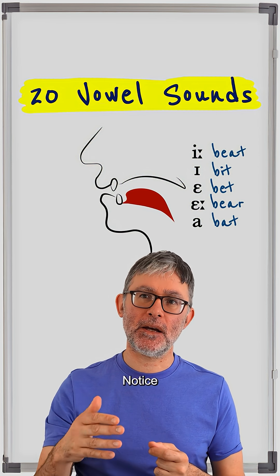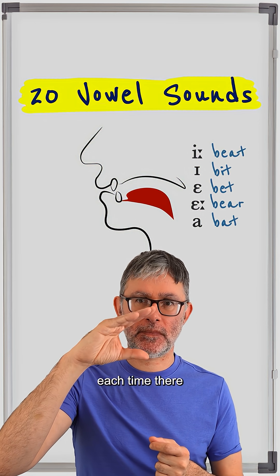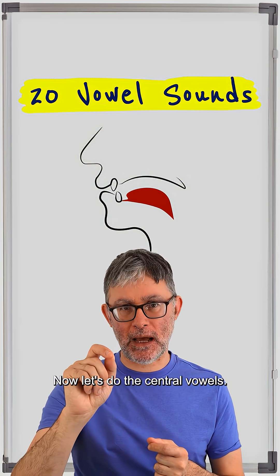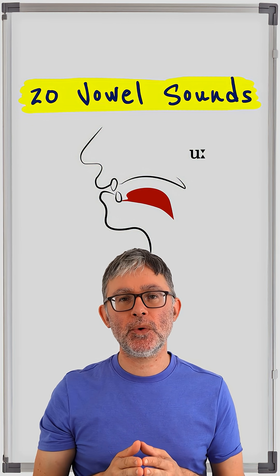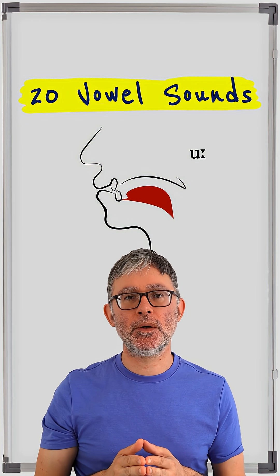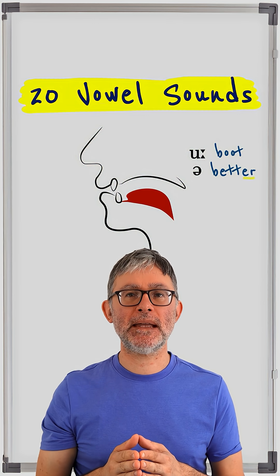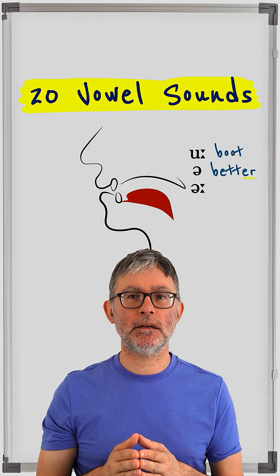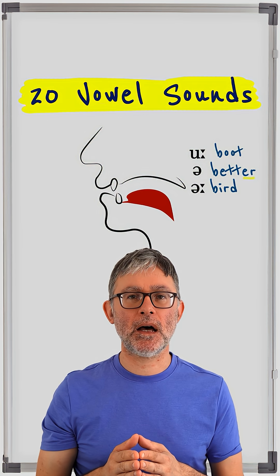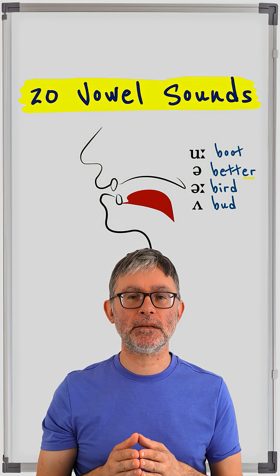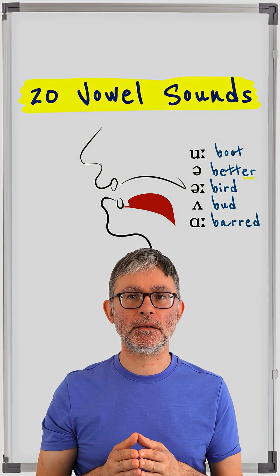Notice we're increasing the space each time there. Now let's do the central vowels — we have five of those: 'oo' — boot, 'u' — butter, 'u' — bird, 'u' — bud, 'are' — bard.